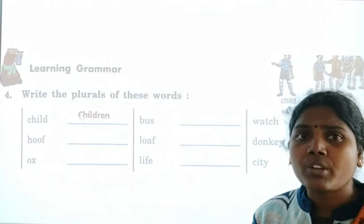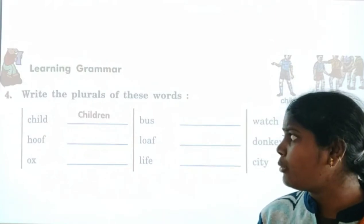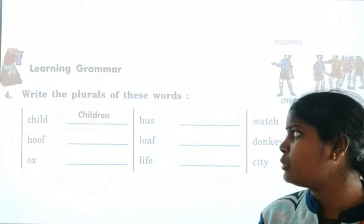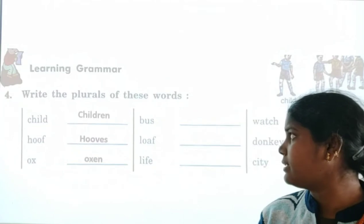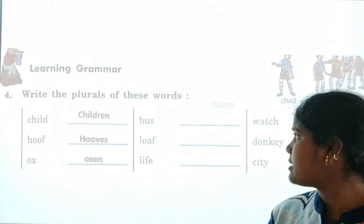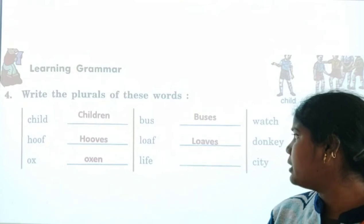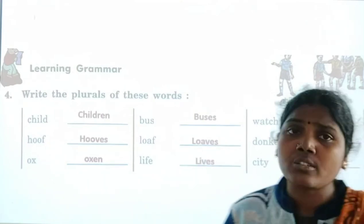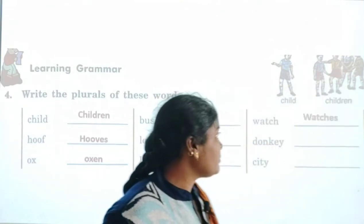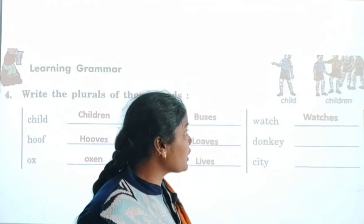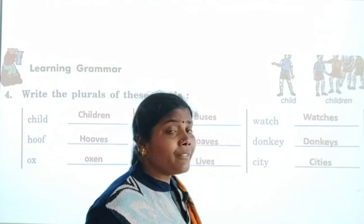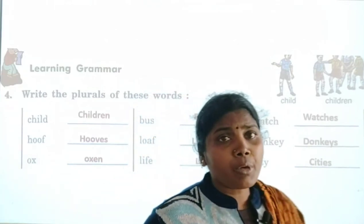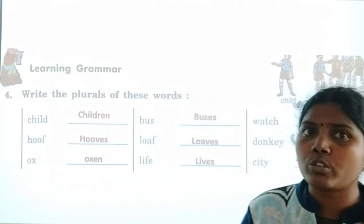Child — children. Oof — oofs. Ox — oxen. Bus — buses. Loop — loops. Life — lives. Watch — watches. Donkey — donkeys. City — cities. Now we will learn both the singular form and plural form.